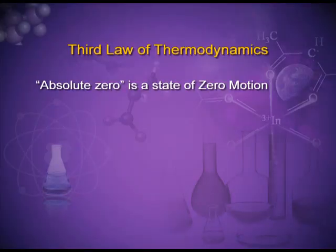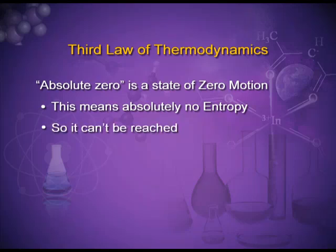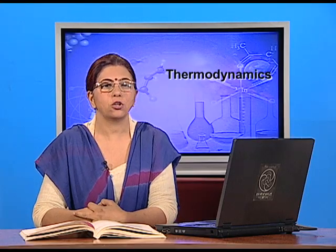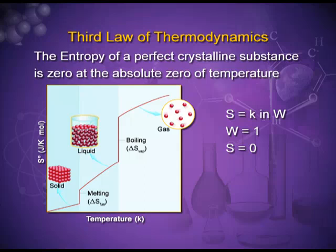Third law of thermodynamics: absolute zero is a state of zero motion, meaning absolutely no entropy, and that state cannot be reached. The third law of thermodynamics states that the entropy of a perfect crystalline substance is zero at the absolute zero of temperature. As we move from solid to liquid and liquid to gaseous state at melting and boiling temperatures respectively, entropy increases. In the reverse order, orderness increases. Solids are more ordered than liquids, and liquids are more ordered than gases. Solids have the lowest entropy and gases have the highest entropy.